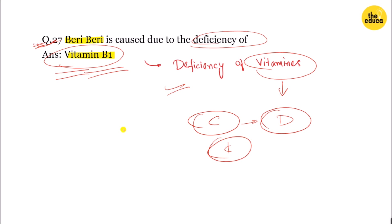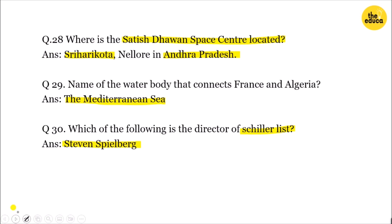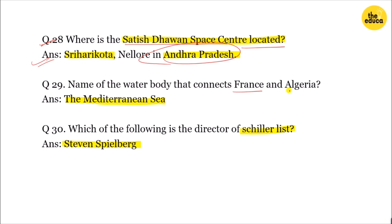The Satish Dhawan Space Research Centre is located at Sriharikota. The next question asks about the name of the water body that connects France and Algeria — the answer is the Mediterranean Sea.